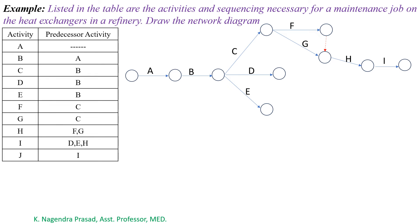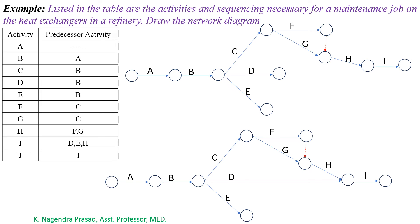Here, observe that activity H is only the predecessor activity for activity I. For this, we have to modify activity D. I is started after completion of H and D. Also, from the table, activities D and E are having common successor and predecessor activities, that is activity B and I. So here draw a dummy activity from E.